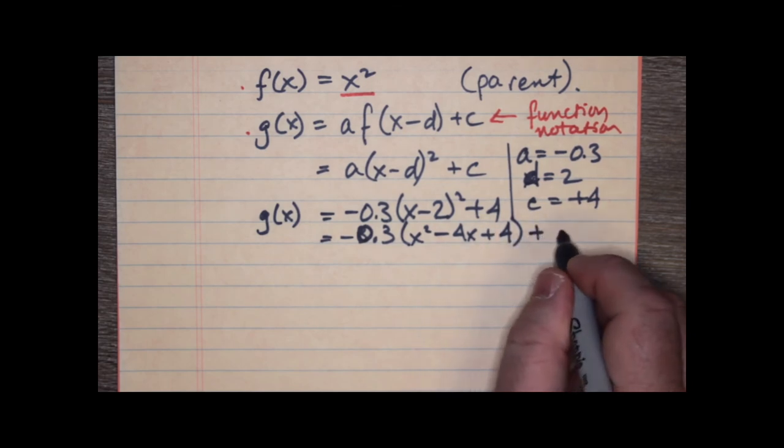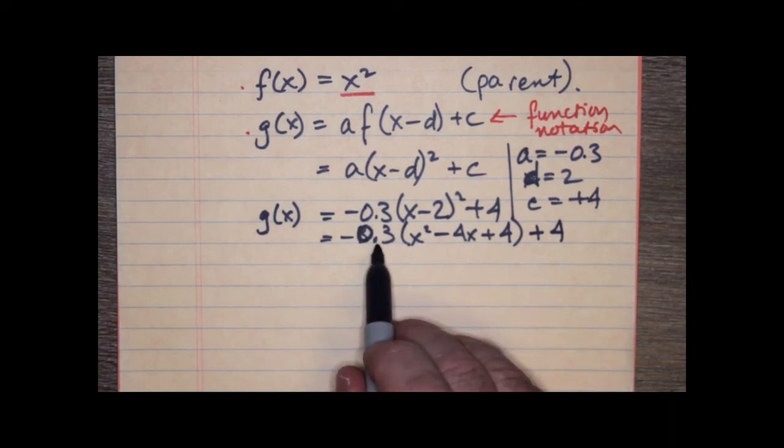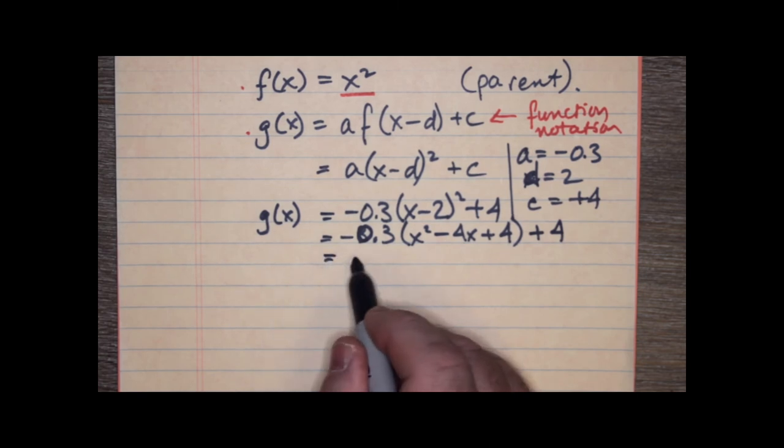And then we have negative 2x twice to get negative 4x, and negative 2 times negative 2 is positive 4. And then we have another positive 4 added. Notice that this is added outside the brackets, so we don't deal with it quite yet. We have to still deal with the multiplication of 0.3, negative 0.3.